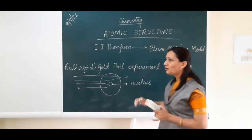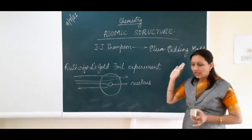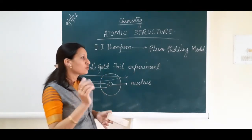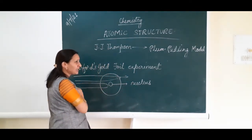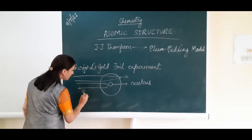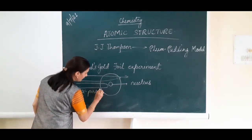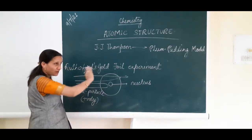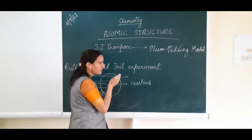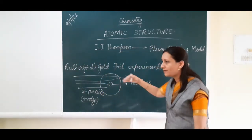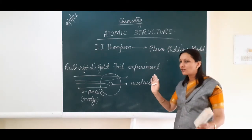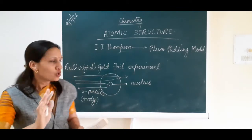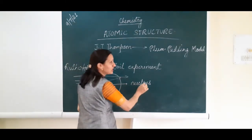After observing this, he drew the conclusion that there is something inside the atom — something present at the center. Rutherford called it the nucleus. The nucleus is positively charged. Why? Because alpha particles are positively charged, and when they returned back, it meant something positively charged was present there. Like charges repel each other and unlike charges attract. That is why this nucleus is positively charged — because of the presence of protons.